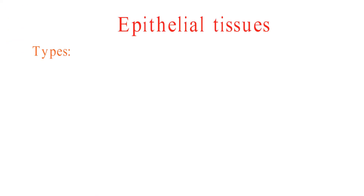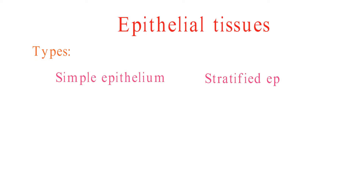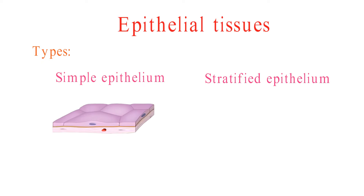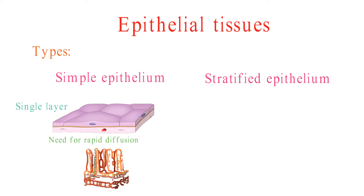There are two main types of epithelial tissue: simple epithelium and stratified epithelium. Simple epithelium is made up of a single layer of cells. It is found in areas where there is a need for rapid diffusion, such as the lining of the small intestine.